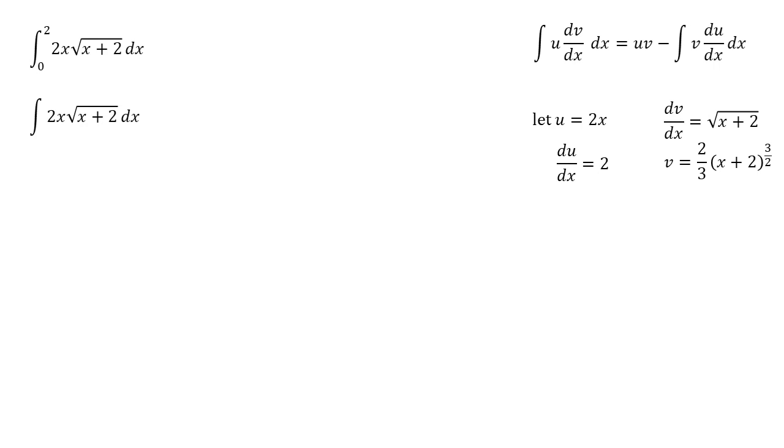Now we've got these, we can put them into our formula and start to integrate. The first part of the formula is the uv part. So we're going to do 2x times two thirds x plus 2 to the power of 3 over 2. So that becomes 4x over 3 times x plus 2 to the power of 3 over 2. Remember this part is out of the integral now.